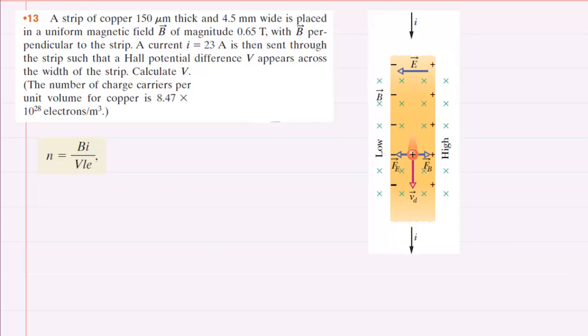This question involves what is known as a Hall potential difference. Basically, you have current that is being sent through a strip of copper in the presence of a magnetic field. Charges start to accumulate on one side of this metal strip, and that creates an electric field across the strip, which in turn creates an electric potential.